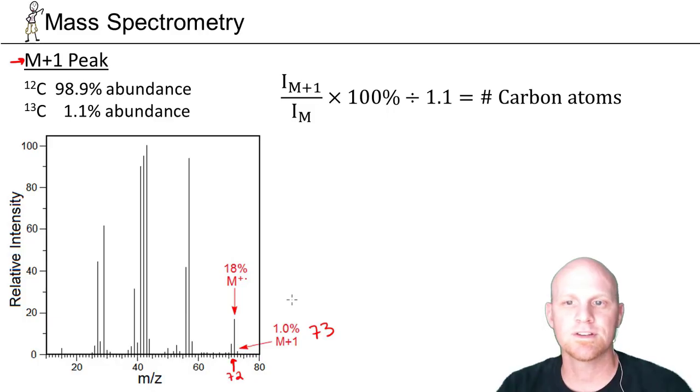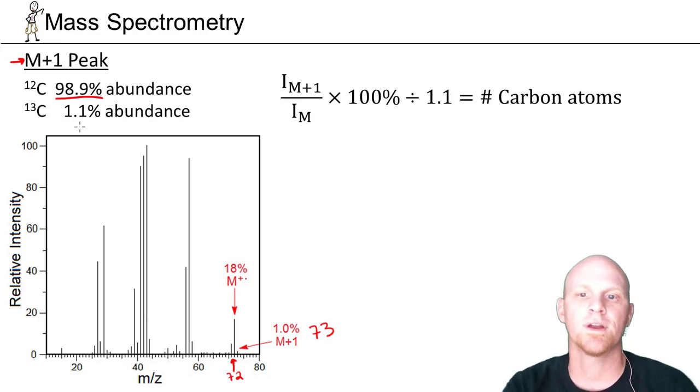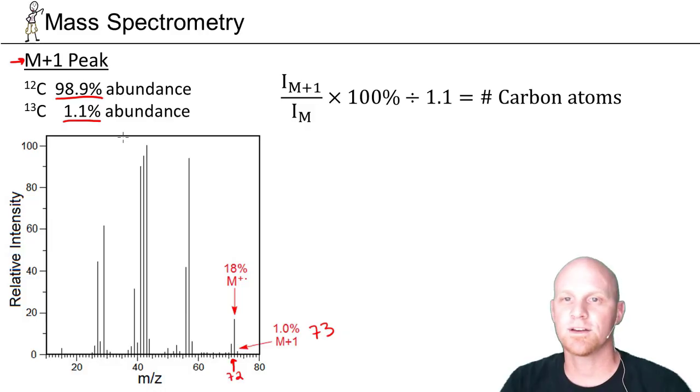If you know the relative intensities of those two, we can find out some useful information. It turns out that carbon-12 has a natural abundance of 98.9%, carbon-13 1.1%, and carbon-14 a very, very super tiny fraction of a percent, and we don't even worry about carbon-14.